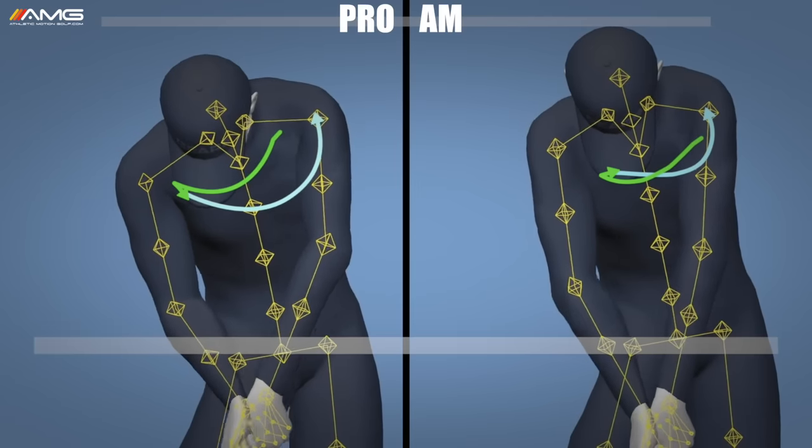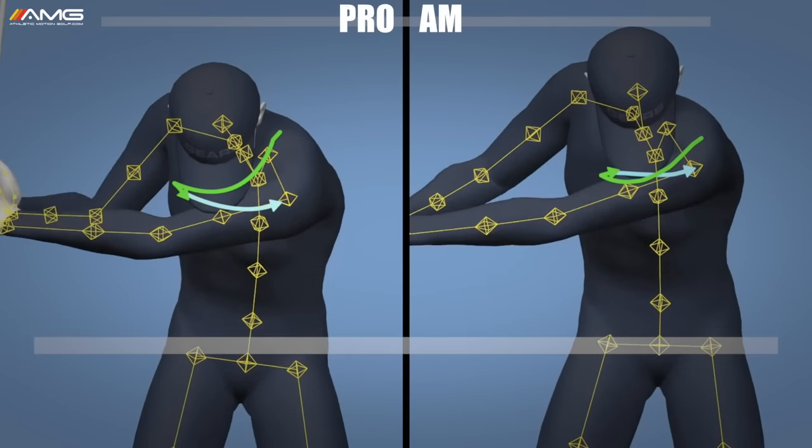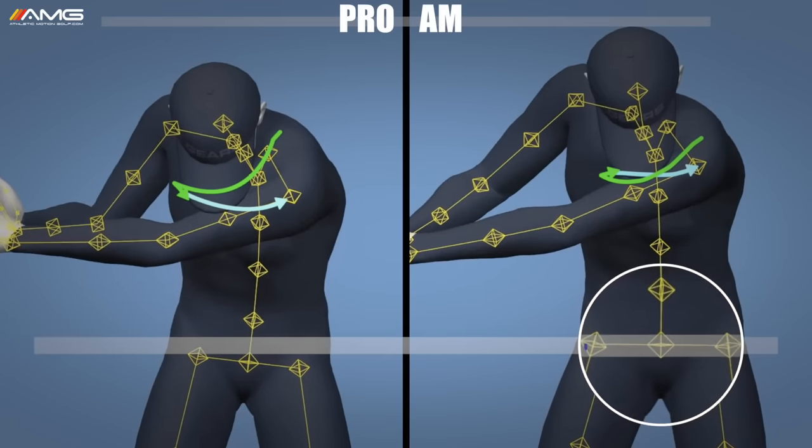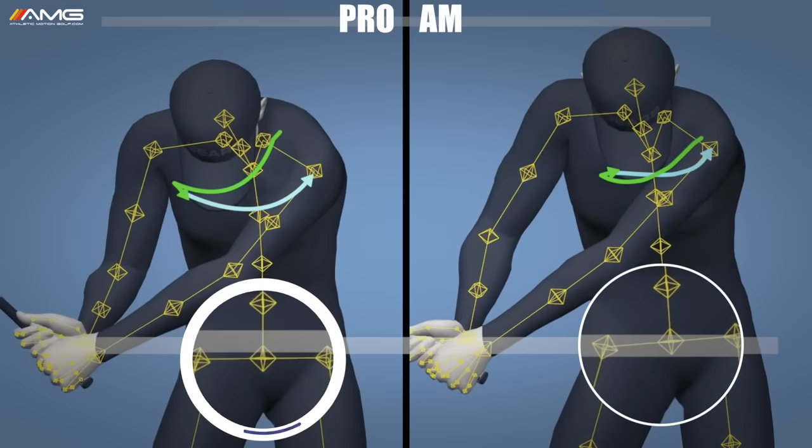Right here at this delivery point, let me point out something else too. Right here is where the amateur levels out his hips. We can see how high the hands are relative to that level hip line. And we can see our pro levels out right here where his hands are opposite his hips. We see this all the time as a distinguishing factor between the two categories of golfers.